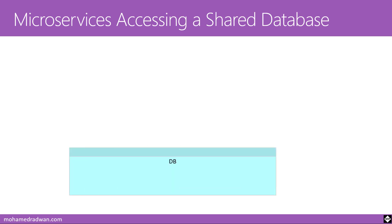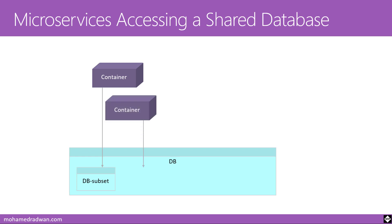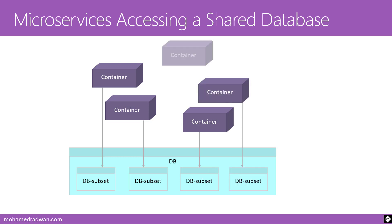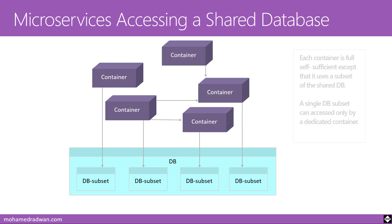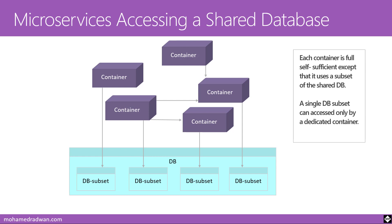In the ideal world, every microservice would use a separate database, but in reality having that many databases can be challenging. In many cases, microservices access a shared database, but each container accesses only one subset of that database, while another container accesses a different subset. Containers also interact with each other, and each container is fully self-sufficient except that it uses a subset of the shared database — a single database subset is accessed only by its dedicated containers.